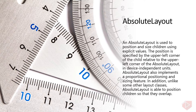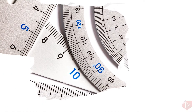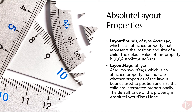An Absolute Layout should be regarded as a special-purpose layout, to be used only when you can impose a size on children, or when the element's size doesn't affect the positioning of other children. The Absolute Layout class defines the following properties. First is the LayoutBounds of type Rectangle, which is an attached property that represents the position and size of a child. The default value of this property is 0, 0, AutoSize, AutoSize.